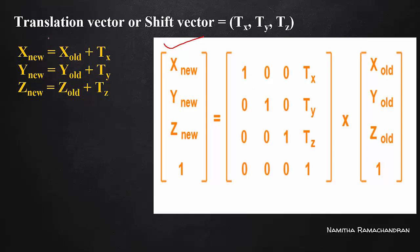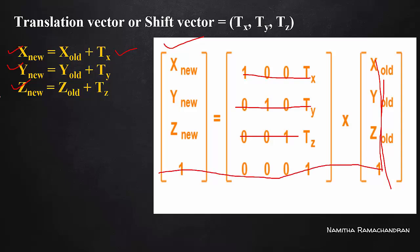The translation equation is a matrix multiplication result. The translation matrix is: [1 0 0 tx / 0 1 0 ty / 0 0 1 tz / 0 0 0 1] multiplied by [x_old, y_old, z_old, 1]. So x_new = x_old + tx, y_new = y_old + ty, z_new = z_old + tz, and the homogeneous value remains 1.